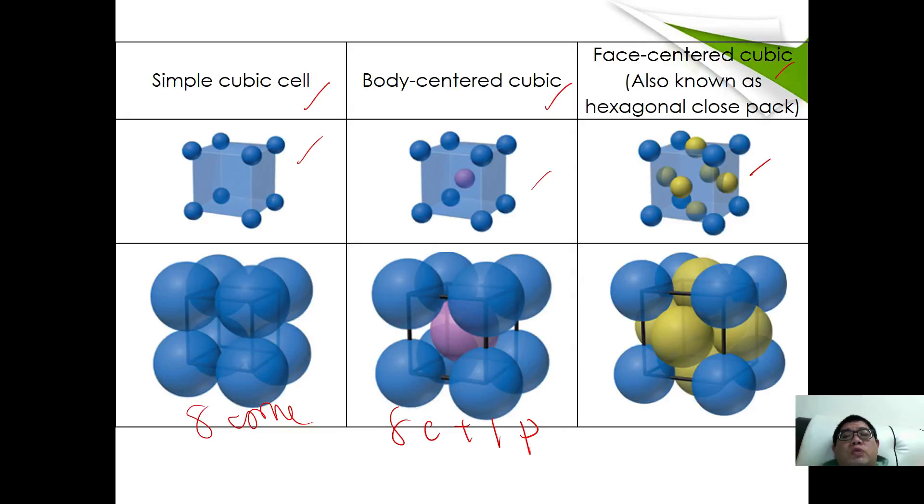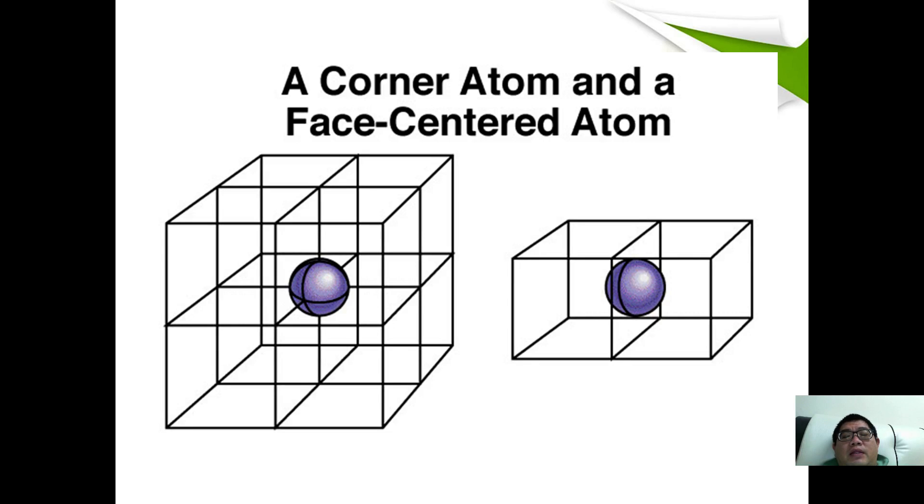If we cut through the cubic cell, imagine we have something like this. Each body center is joined up by 8 corners, so in other words, each corner will occupy 1 over 8 of the unit cell. Whereas in face-centered, the edge of the faces contains half particles. Therefore each face has half of the particle at the top.